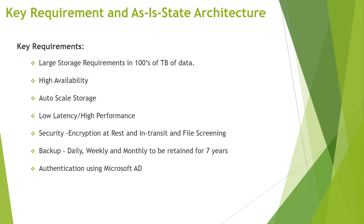Now, what were the key requirements for this file share? It had about 100 TB of data, was required to be highly available, and there was a requirement for auto-scaling on the storage side — once provisioned storage reached 80 TB out of 100 TB, it should automatically scale by 20–30%. It also required very low latency of a couple of seconds. From the security perspective, we needed encryption at rest and in transit, plus file screening for malware and ransomware attacks. From the backup perspective, we needed daily, weekly, and monthly full backups retained for seven years. Users also needed to be authenticated using Microsoft AD.